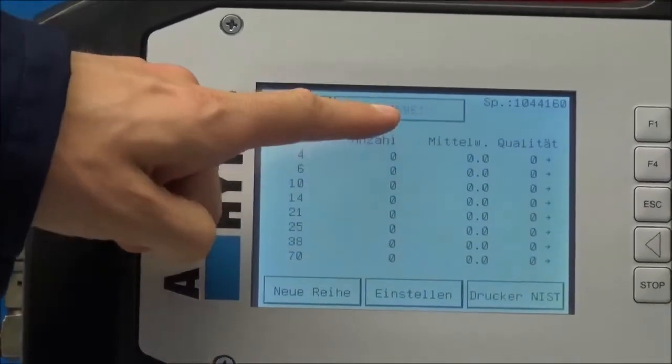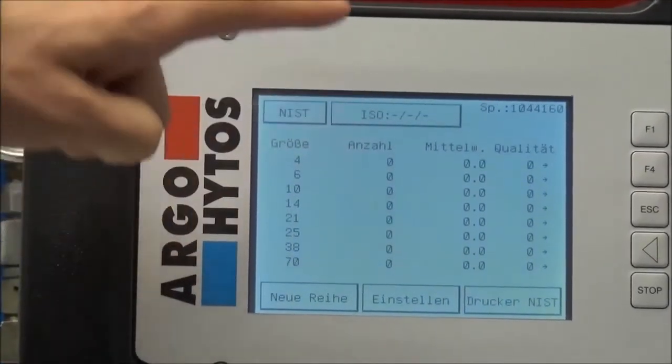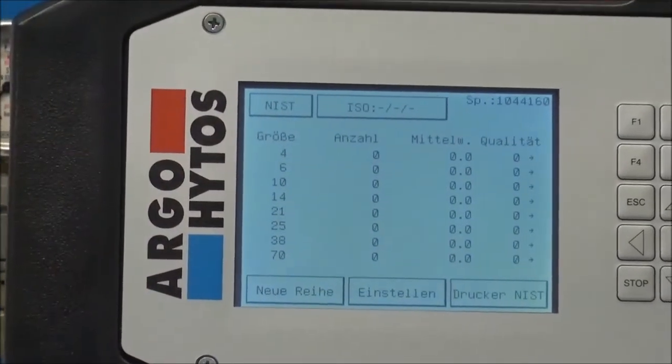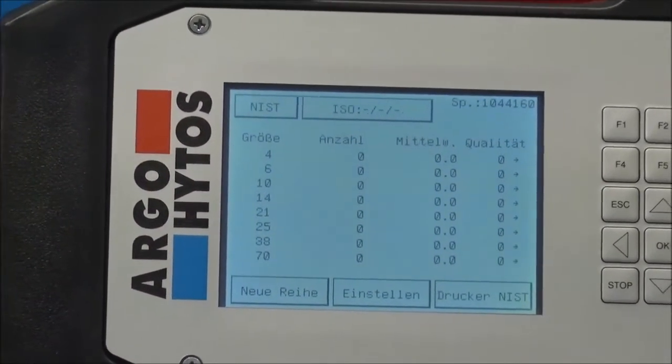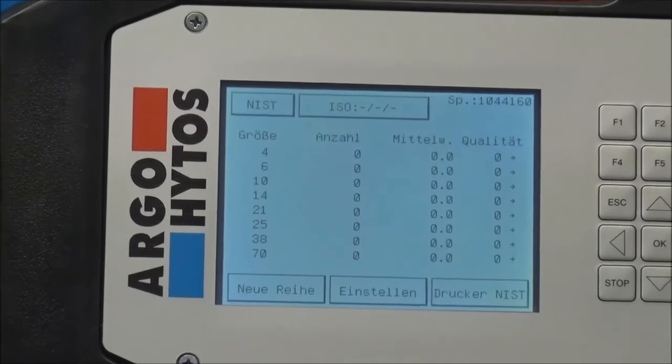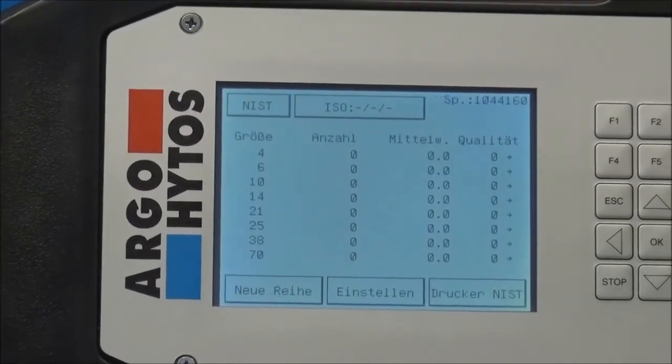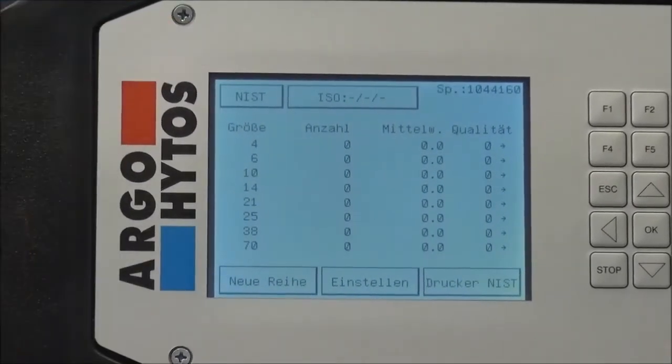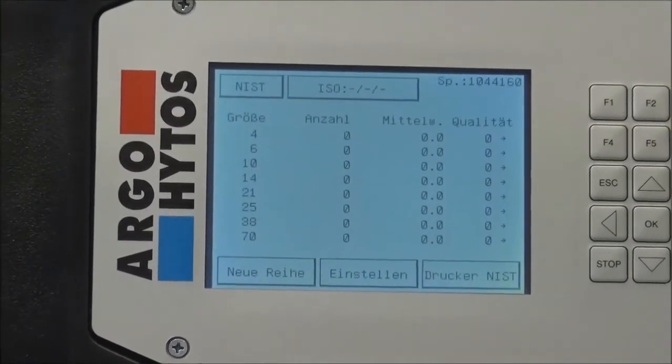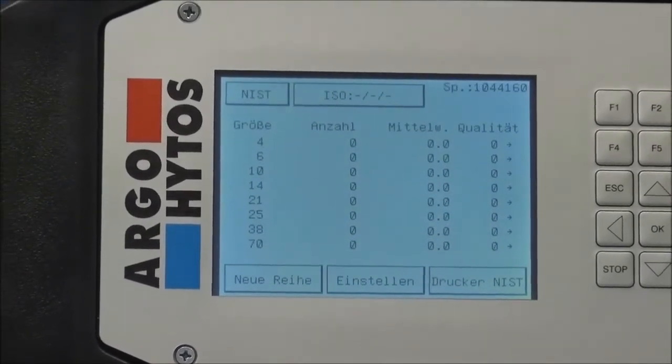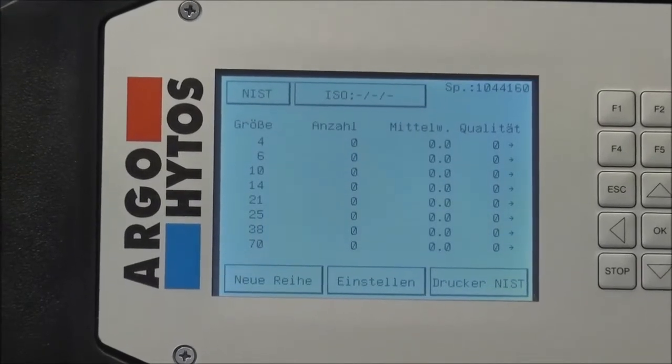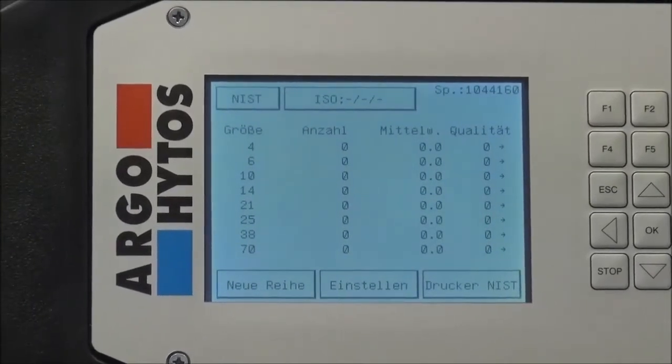We select by pushing directly on the button so it's directly able or possible to select an option by pushing at the point where the parameter is shown. The now selected particle class or standard that we are showing is the ISO standard and that's the one we want also to demonstrate.